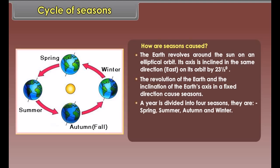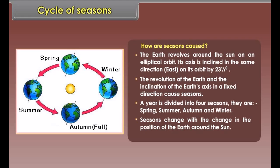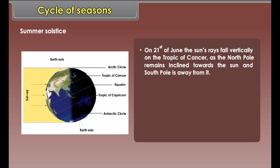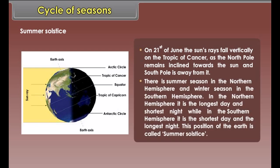Cycle of seasons. How are seasons caused? The earth revolves around the sun on an elliptical orbit. Its axis is inclined in the same direction on its orbit by 23 and a half degrees. The revolution of the earth and the inclination of the earth's axis in a fixed direction cause seasons. A year is divided into four seasons: spring, summer, autumn, and winter. Seasons change with the change in the position of the earth around the sun.